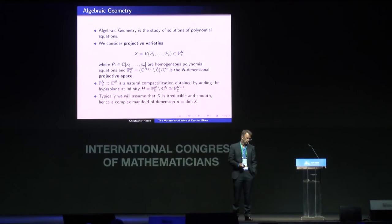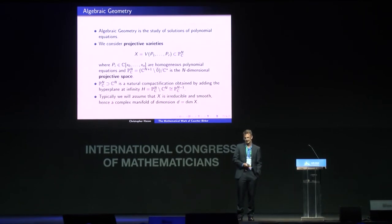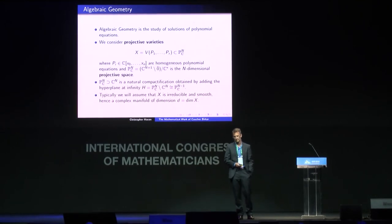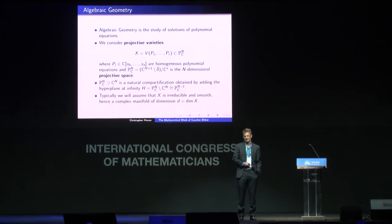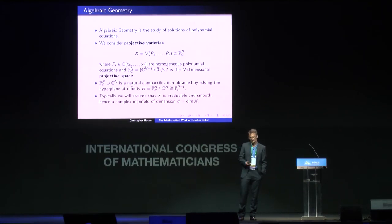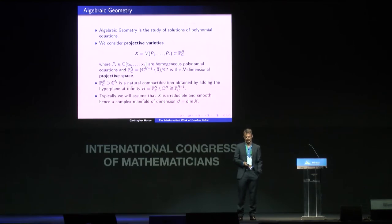I'd like to start by saying a few words about algebraic geometry, Caucher's subject of study. Algebraic geometry studies the solutions of polynomial equations. We typically consider projective varieties — subsets of complex projective space defined by a finite set of homogeneous polynomials. If you're not familiar with complex projective space, you can think of it as a natural compactification of affine space obtained by adding a hyperplane at infinity.